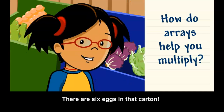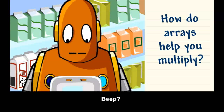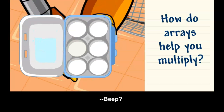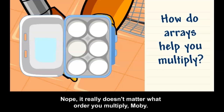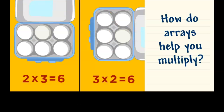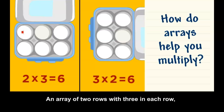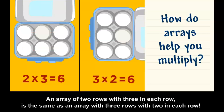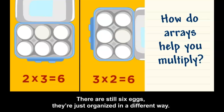There are six eggs in that carton. An array of two rows with three in each row is the same as an array with three rows with two in each row. There are six eggs — they're just organized in a different way.